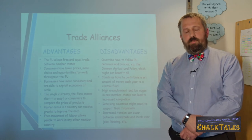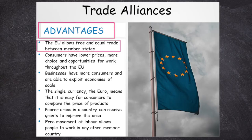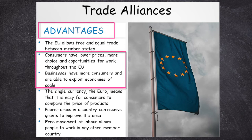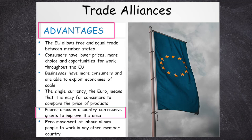One of the ways in which countries sometimes try and reduce inequalities in world trade is by joining a trade alliance. The benefits of membership of trade alliances like the EU is that they allow free and equal trade between member states. Consumers, in theory, have lower prices because businesses are able to exploit economies of scale, leading to cheaper goods and also creating more opportunities for work across the European Union. Having a single currency, as is the case in the Eurozone, means that it is easier to compare prices, which stops prices in any one country becoming too expensive. Poorer areas can sometimes receive grants from the EU Structural Funds, which help to improve the infrastructure and industry in the area. And free movement of people allows workers to seek employment in any other member state, not just the one that they were born in.